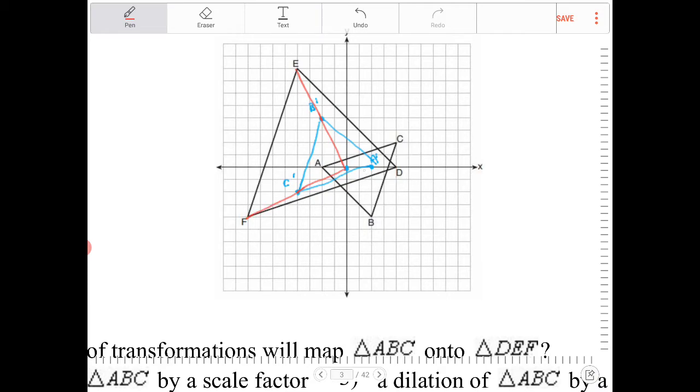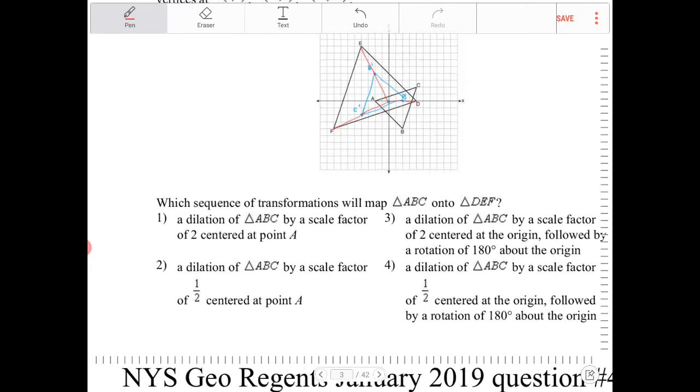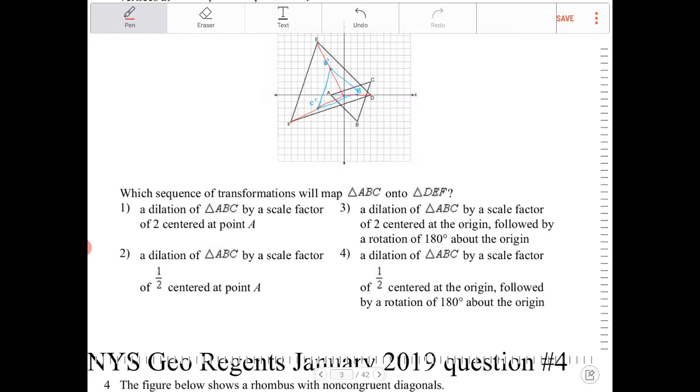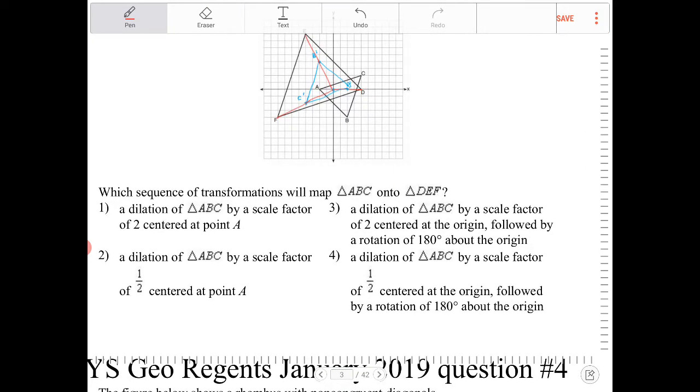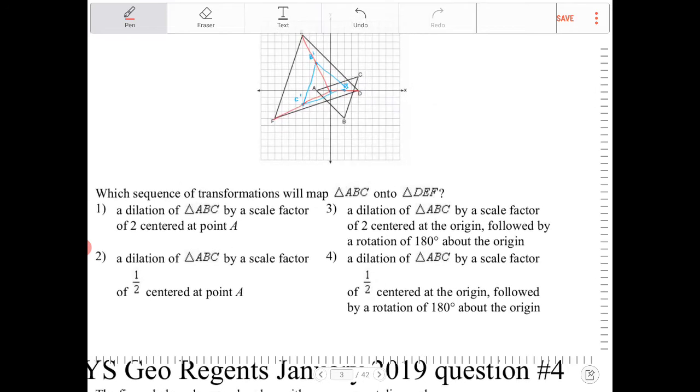And then A prime to D, go over two and then over two again. So, we're looking for a rotation over the origin of 180 degrees and then a dilation of two, again, over the origin. So, that looks like it's going to be a dilation of two, followed by a rotation of 180 degrees.